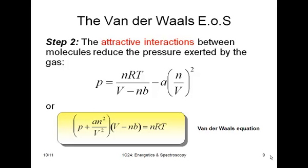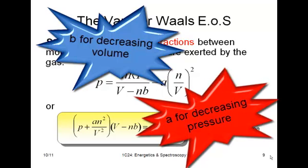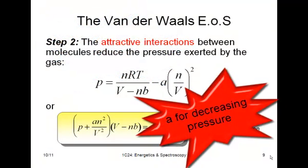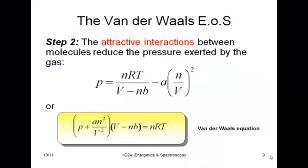So there's two new empirical terms. The first one, B, accounts for a decrease in volume, and A accounts for the attractive interactions between the molecules. So the overall equation can be written as this.